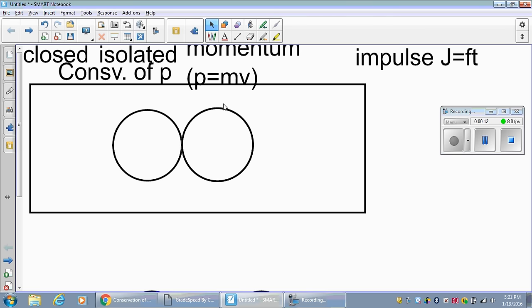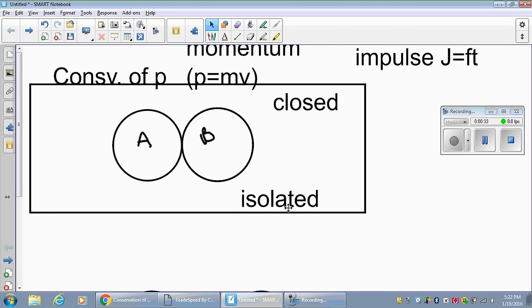The very first thing is when we're doing collision problems, problems that have to do with impulse momentum, we have to define the system. That's why I put a box around these two objects here, say this is object A, object B. We have to tell the person working the problem that our system is both closed and isolated.